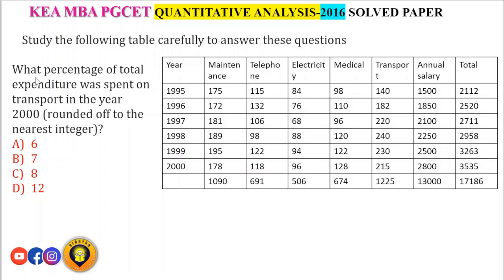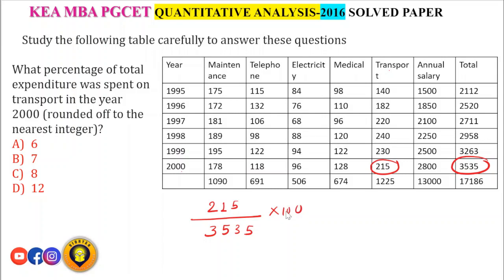Study the following table carefully to answer these questions. What percentage of total expenditure was spent on transport in the year 2000, rounded off to the nearest integer? In year 2000, transport expenditure = 215 rupees. Total expenditure = 3535. So we need 215 / 3535 × 100.